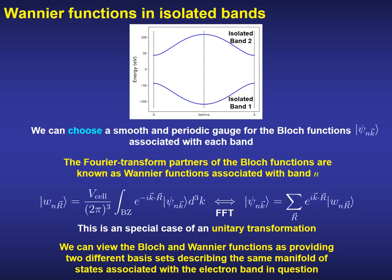From a mathematical point of view, the Fourier transform is a special case of unitary transformation. Therefore, we can view the Bloch and Wannier functions as providing two different basis sets describing the same manifold of states associated with the electron band in question.